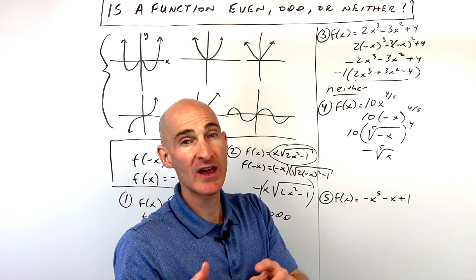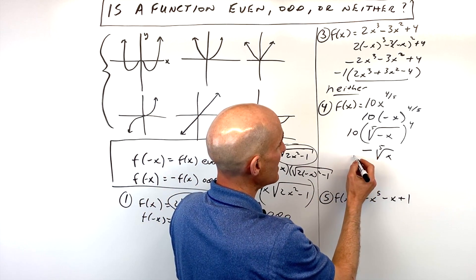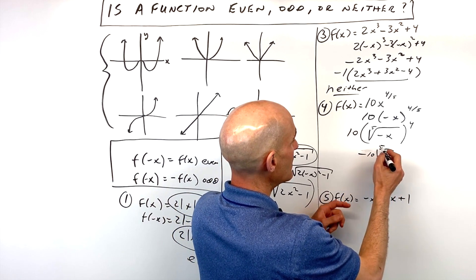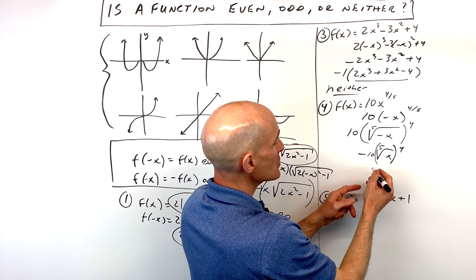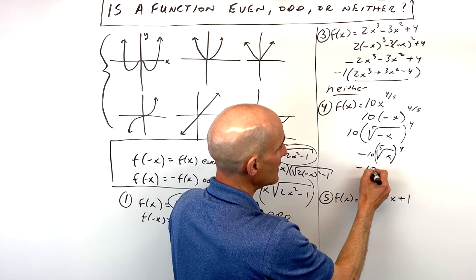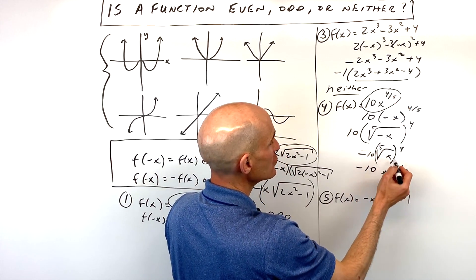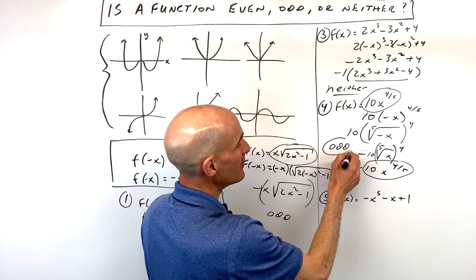So if you had the cube root of negative 8, that's just going to be negative 2. It's going to be a negative number. And then multiply by this 10 here, this is going to make this a negative 10. And then this quantity here is raised to the 4th power. So you can see we're ending up with negative 10 times x to the 4/5th power. It's the same as the original function, but see how it's multiplied by negative 1? That means this is going to be an odd function.